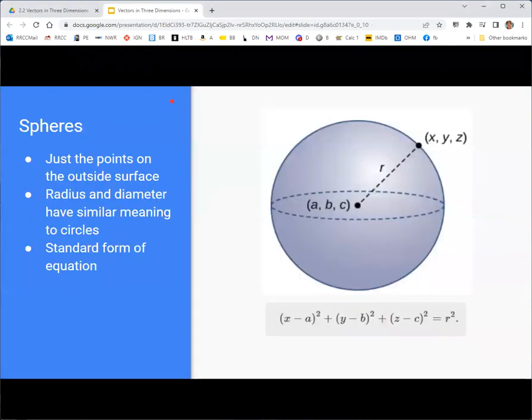Now what about spheres? So the equation for a sphere with center a, b, c, and radius r is very similar to the equation of a circle with center a, b, and radius r. We just, again, add on the third dimension there. And keep in mind that the sphere is just the spherical shell, the points on the outside, right? If you want to talk about a solid object, including the interior, you'd refer to it as a ball, not a sphere.